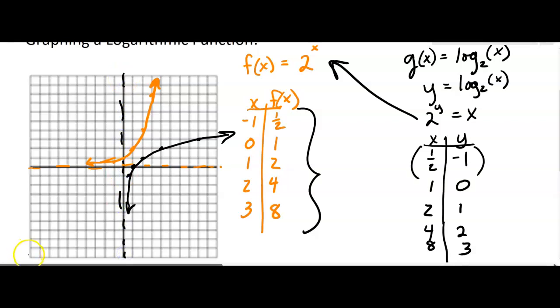If you think about the diagonal line and fold it, it's symmetric. The orange function f(x) and g(x) are symmetric about that dotted line.